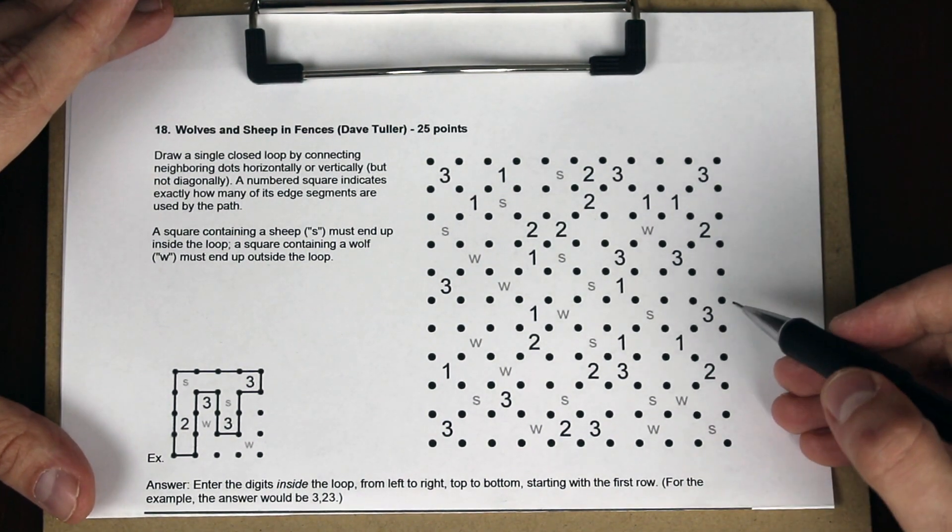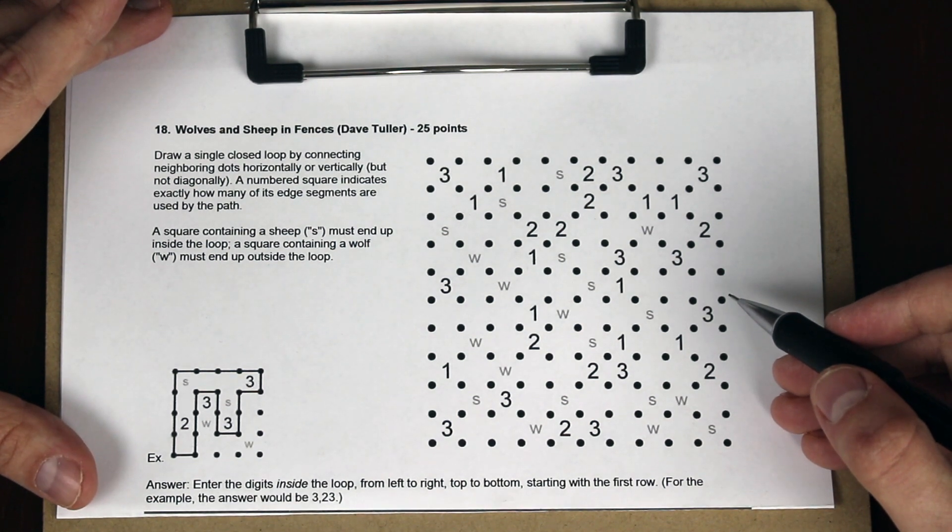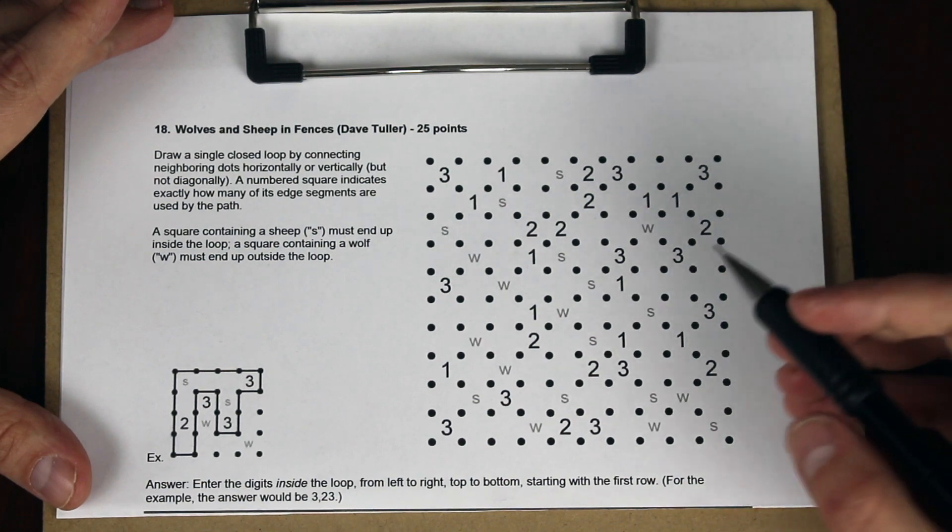This puzzle here is from the 2009 US Puzzle Championship, and is called Wolves and Sheep and Fences. It was designed by Dave Toller.